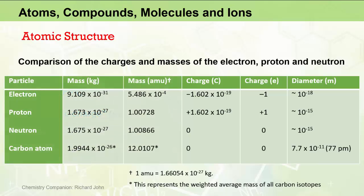As a result, the charge on the electron is usually expressed as minus 1, and the charge on the proton is usually expressed as plus 1. The charge on the neutron is 0.